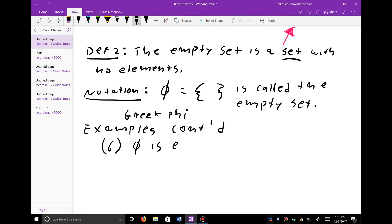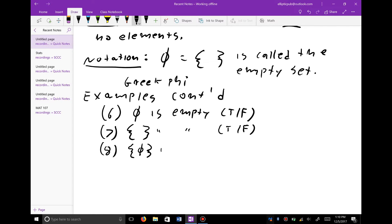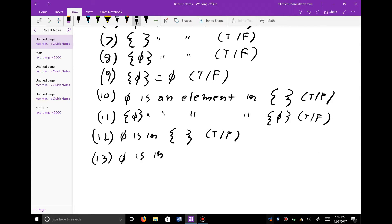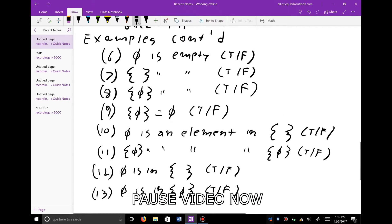Now I want to give you some examples. Phi is empty, true or false. Seven, this is empty, true or false. And eight, the set containing the empty set is empty, true or false. And how about nine, the set containing the empty set is equal to the empty set, true or false. Ten, phi is an element in the empty set, true or false. And how about eleven, is an element in the... true or false. So pause the video and see if you can answer these multiple choice questions and then come back.